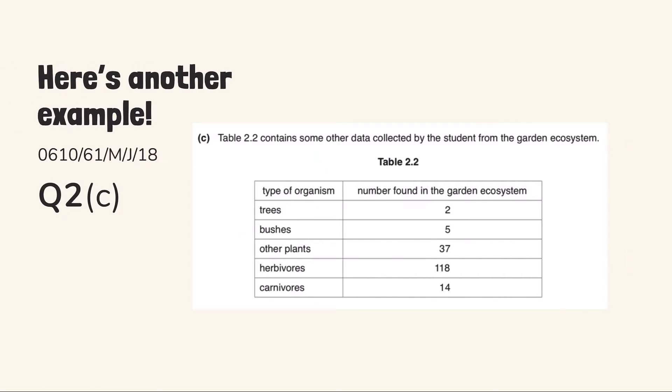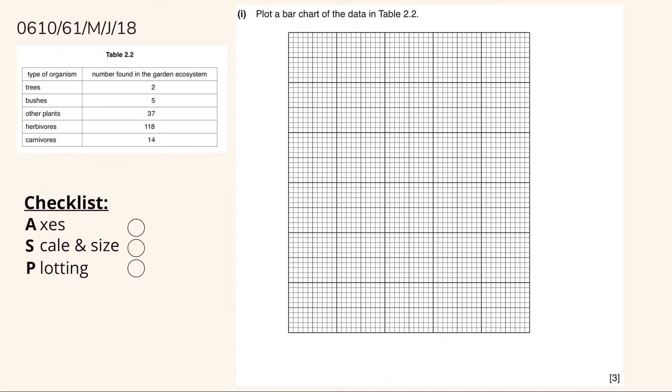Here's another example. This question comes from Paper 6, 2018, May, June, Variant 1. And it says that Table 2.2 contains some other data collected by students from the Garden Ecosystem. In this question, we will be plotting a bar chart. So first of all, we need to add the labels.